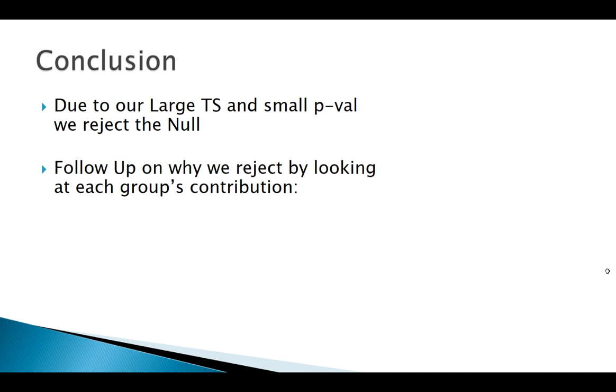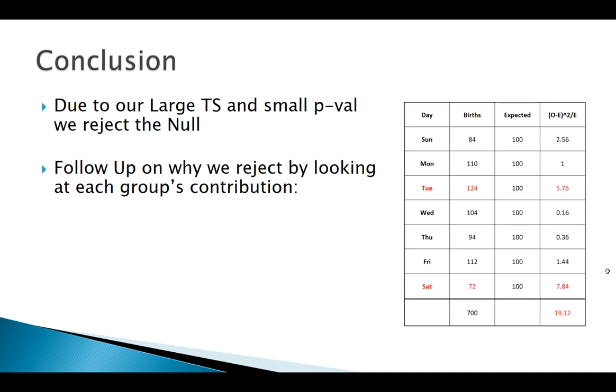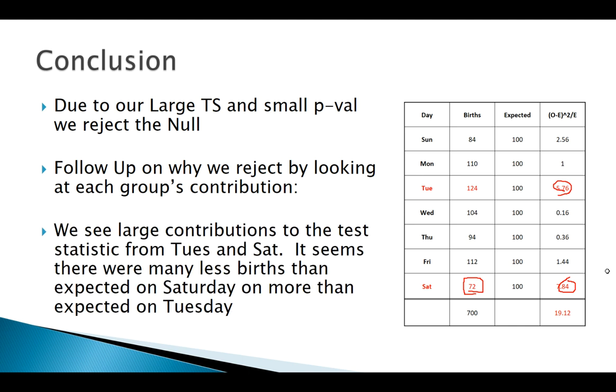Let's look and see what we saw. Now visually we saw that Tuesday looked a little high, Saturday looked a little low, and we see that here with this large red test statistic, this large contribution to our test statistic. There's definitely something going on on Saturday - we've got less than we thought on Saturday and we have way more than we expected on Tuesday. Who knows why.